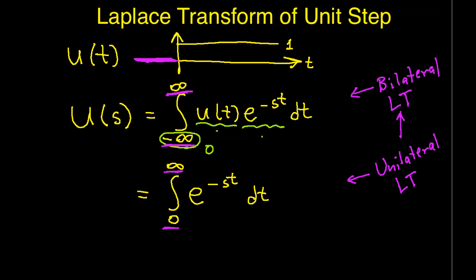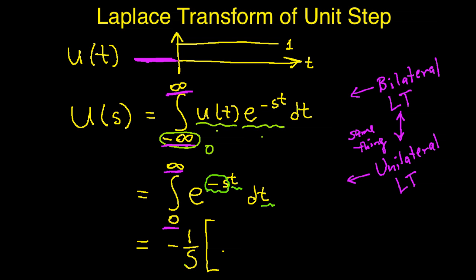So for the unit step function, the bilateral and unilateral transforms are the same thing. This is actually true in general for signals that are 0 for values of t less than 0 — their unilateral and bilateral Laplace transforms will be the same. So let's work the integral. This is an integral with respect to t. The minus s is a constant in terms of the variable of integration, which is t. So I get 1 over that constant times e to the minus s t, evaluated at 0 and infinity.